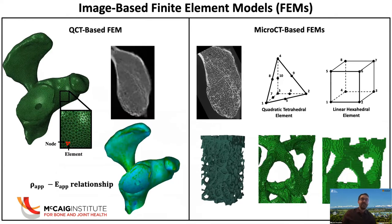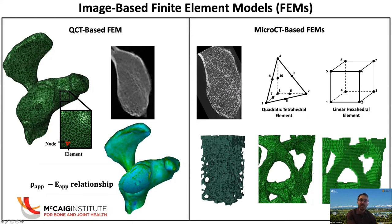We use these often to derive image-based finite element models. A QCT-based finite element model is generally meshed with tetrahedral elements connected by nodes. In relating the image back to our finite element model, we use the density-modulus relationship. For a micro CT-based finite element model, we retain that nice trabecular architecture. We create a binary image thresholded to keep just the bone tissue, and generally assume the bone tissue is homogeneous — the modulus at the tissue level is the same. We can mesh these with a smooth mesh or more commonly use voxel-based models with linear hexahedral elements, which are quite accurate and computationally efficient.